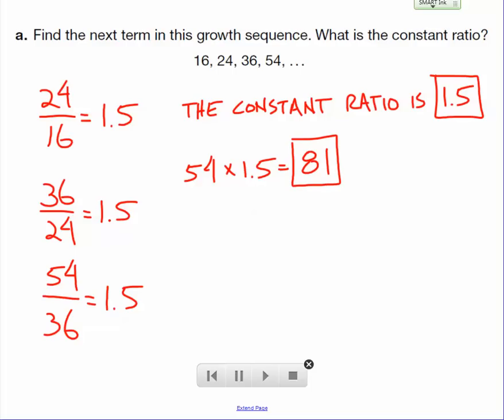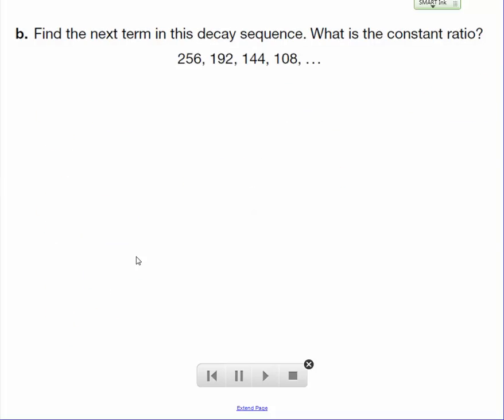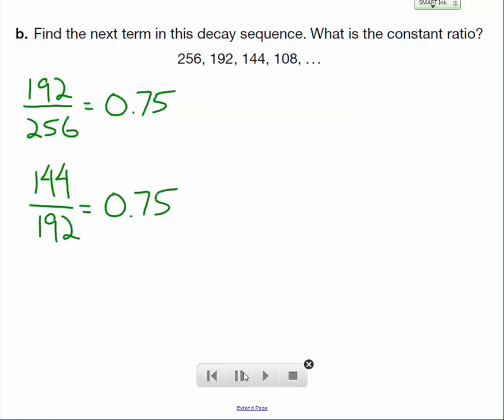Let's do that again. Find the next term in this decay sequence. Well, the process really doesn't change. If we do 192 divided by 256, we get 0.75. If we do 144 divided by 192, we get 0.75. And if we do 108 divided by 144, we get 0.75.